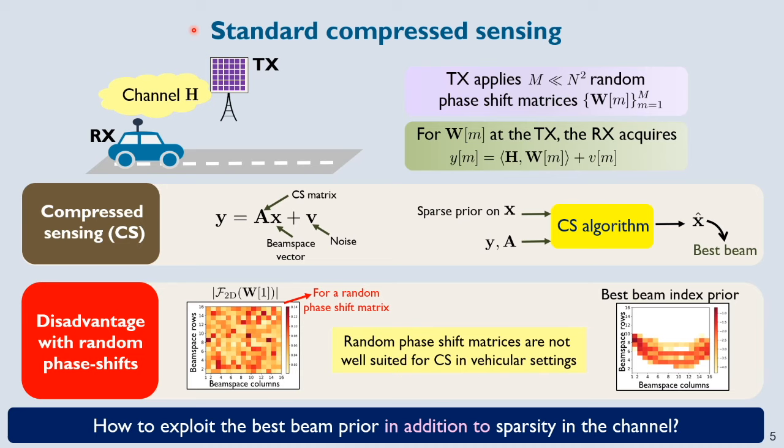In the usual random compressed sensing framework, the transmitter sequentially applies random phase shift matrices for the receiver to acquire channel measurements. Although random phase shift based compressed sensing has nice properties in terms of sparse recovery, it is inefficient when the best beam prior is available as side information. To explain this, let me consider an example of a random phase shift based sensing matrix and let's call it W.